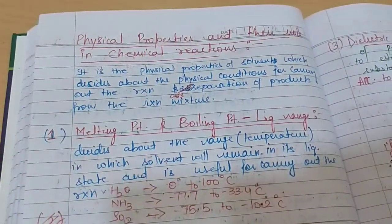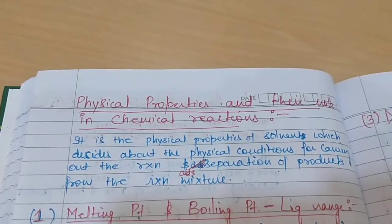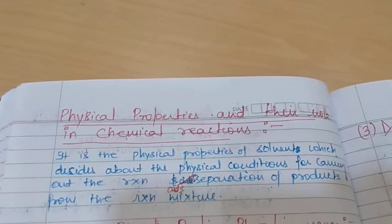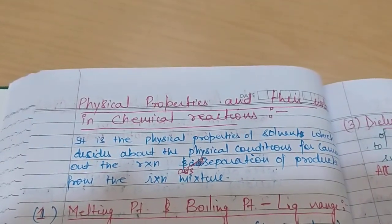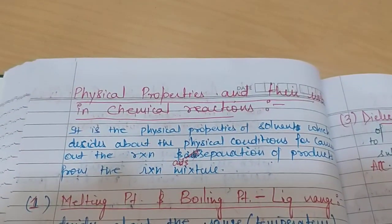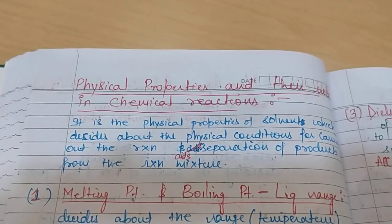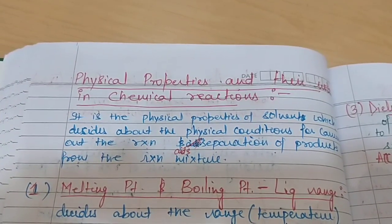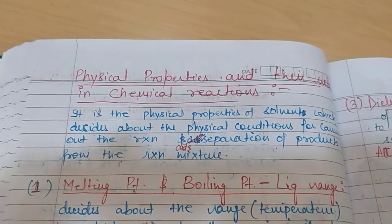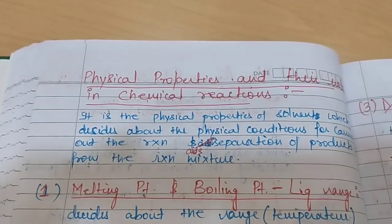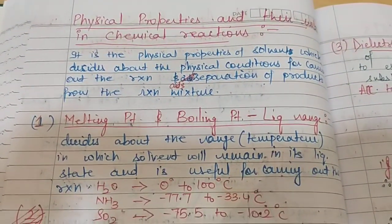Before getting into the details of SO2 and ammonia, we'll first discuss physical properties and their role in chemical reactions. Physical properties play a major role in deciding which solvent to use for a particular reaction. Based on physical properties, we shortlist our solvent, and they also aid in the separation of products from the reaction mixture. So the choice of solvent depends on the physical properties of the solvent.